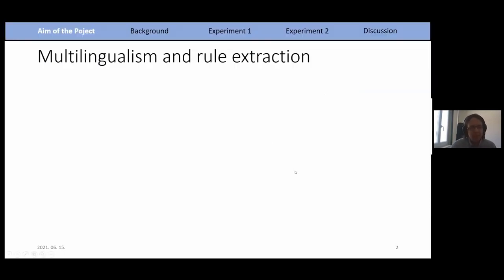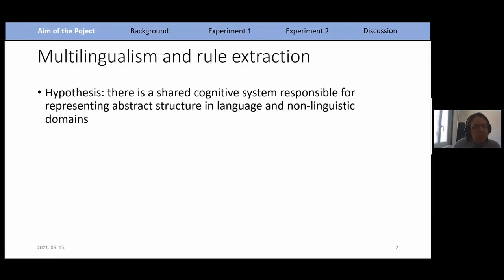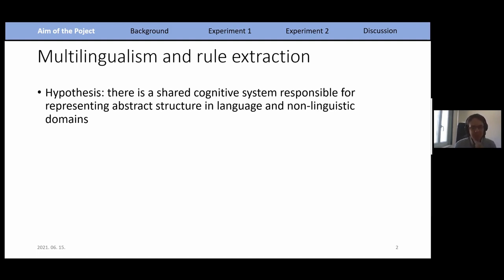To start with, I'd like to give a small overview of what our project aims to do. We work under a hypothesis that suggests there may be a shared, general cognitive system responsible for coding abstract hierarchical structure in language and in non-linguistic domains — one of which could be musical rhythm.